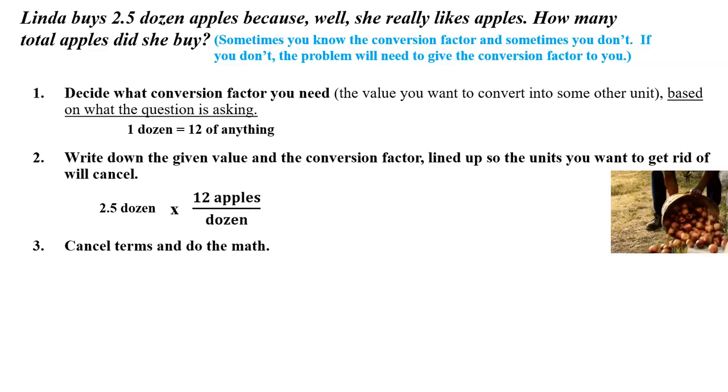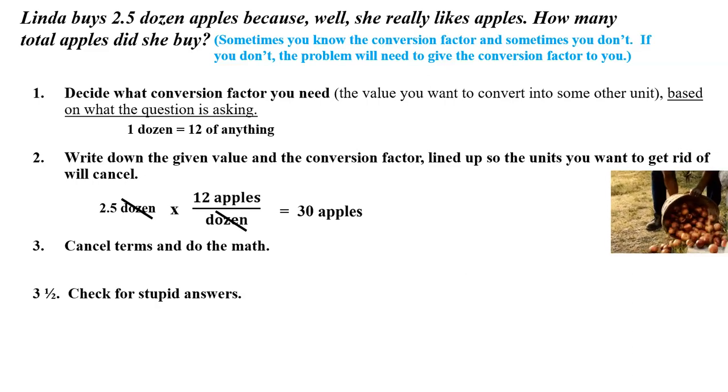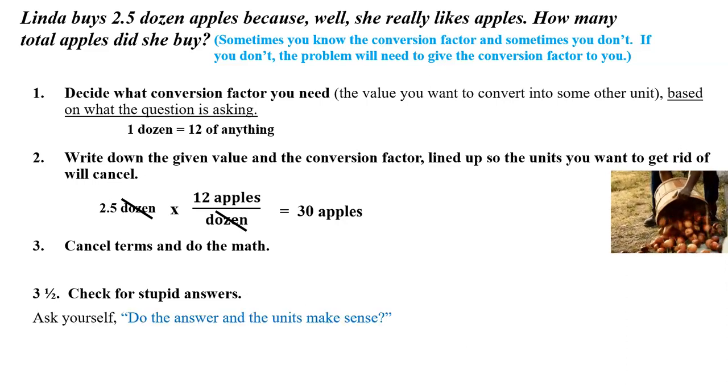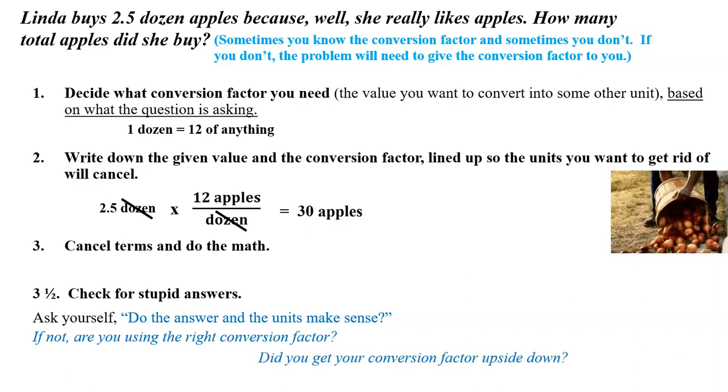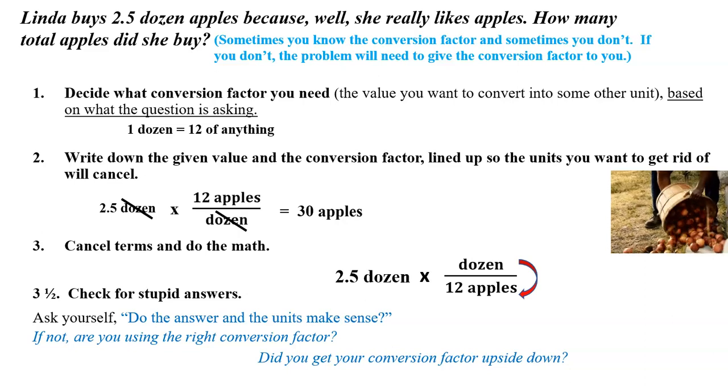And of course, the next step is cancel terms and do the math. All right, so this time we are multiplying. The last time multiplication was a mistake. This time we are multiplying. It's 2½ times 12 is 30 apples. And then the last step, the step 3½, check for stupid answers. Well, does 30 apples seem like a reasonable answer? Does that sound like about 2½ times a dozen? Well, yeah, it does. So, but just in case, we always want to make sure that the units make sense. They do. They did come out in apples. Are you using the right conversion factor? We are. And did you get your conversion factor upside down?